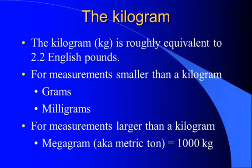Now, to measure mass, we talk about kilograms, and the kilogram is equivalent roughly to about 2.2 pounds in the English system, except the kilogram measures mass. For measurements smaller than a kilogram, we talk about grams, g, and milligrams, mg. To give you an idea, one gram is about the mass of a standard paperclip. For measurements larger than a kilogram, officially we would talk about a megagram, which is one thousand kilograms, but folks usually use the term metric ton, which is the same thing — one thousand kilograms.